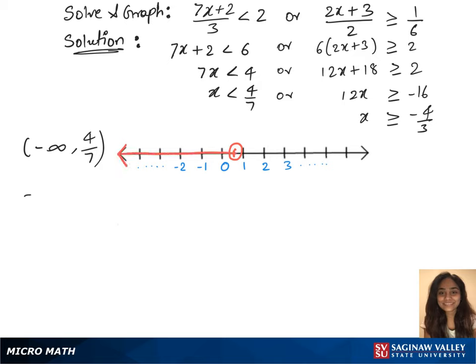For our second inequality, we have the interval notation minus 4 over 3 comma infinity. We'll plot this on the graph as well. Look for minus 4 over 3 on the graph and mark it. That is extending towards the positive infinity.